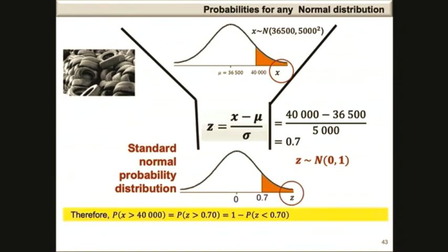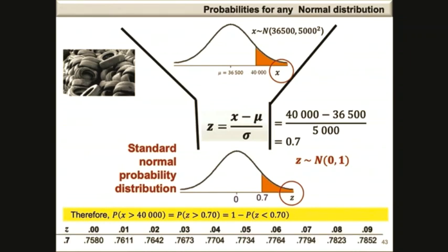Therefore, the probability that x is greater than 40,000 is equal to the probability that z is greater than 0.7, which is equivalent to 1 minus the probability that z is less than 0.7. Looking at the standard normal probability distribution tables, the probability of z less than 0.7 is found on the row z = 0.7 and column 0.00, giving 0.7580. Therefore, our final answer is 1 minus 0.7580, which is 0.242.